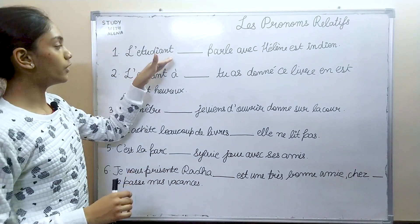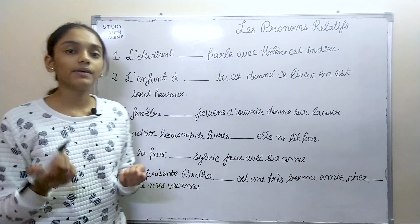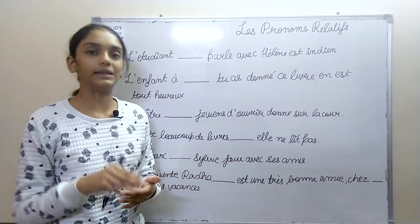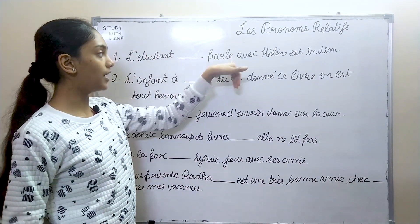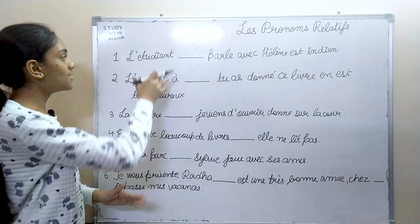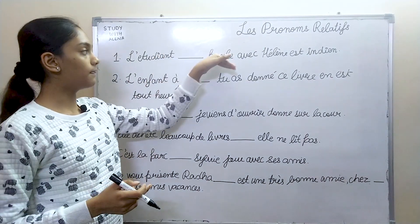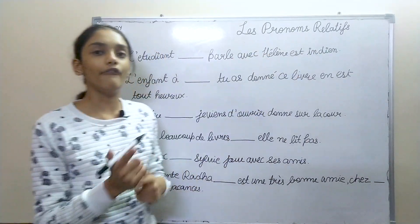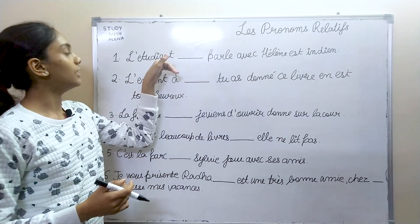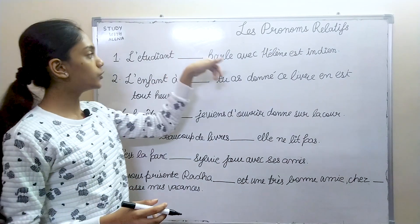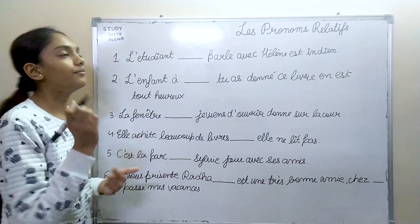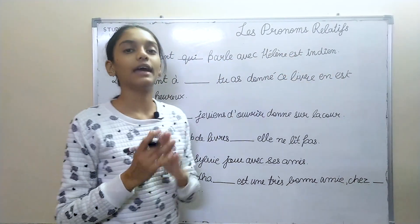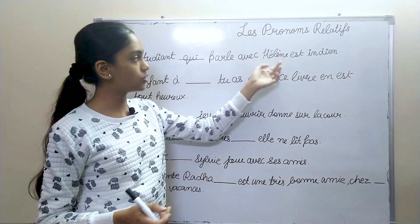First question: "L'étudiant ___ parle avec Hélène est indien." We think of two sentences: "L'étudiant parle avec Hélène" and "L'étudiant est indien." L'étudiant is the repeated word and it is the subject, so we use qui. The answer is: "L'étudiant qui parle avec Hélène est indien" — the student who is talking to Hélène is Indian.